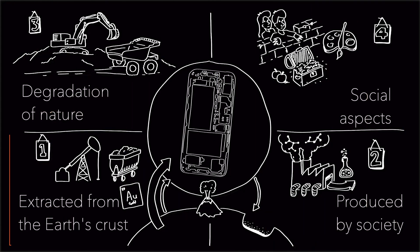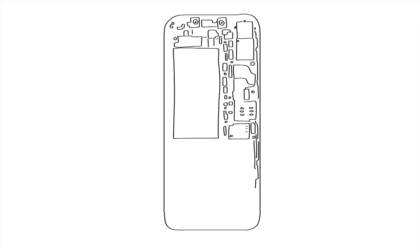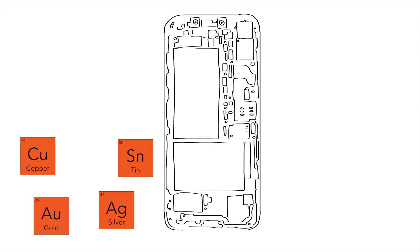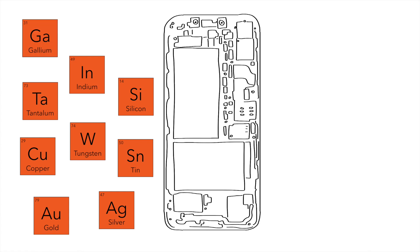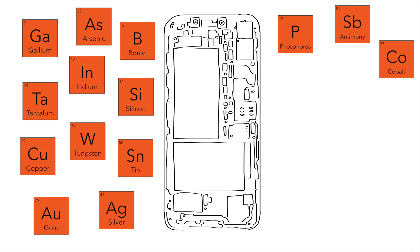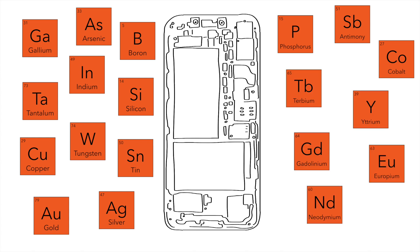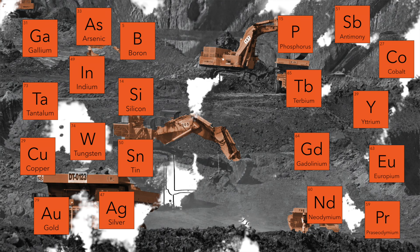First, let's look at how an iPhone contributes to systematically increasing concentrations of substances extracted from the earth's crust. To come to life, an iPhone needs many mined materials. These include gold, silver, copper, tin, tungsten, tantalum, silicon, indium, gallium, arsenic, boron, phosphorus, antimony, cobalt, and some rare earth elements such as terbium, yttrium, gadolinium, europium, neodymium, and praseodymium. And yes, they all need to be extracted from the earth's crust.